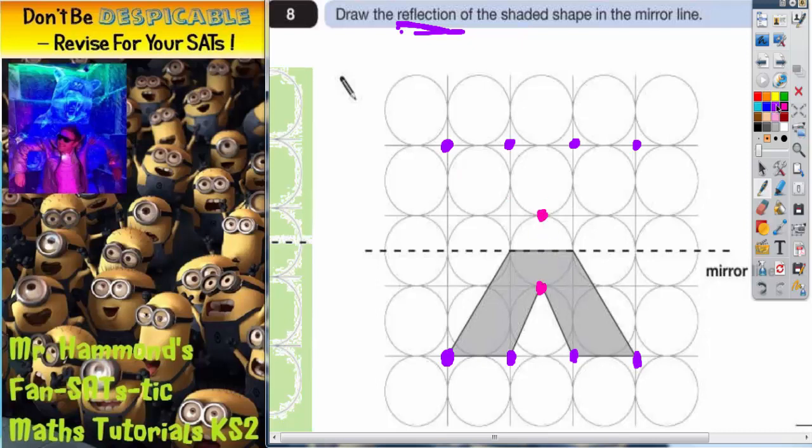Once we've got all our corners, we can just join them up and get our X shape. There we go.